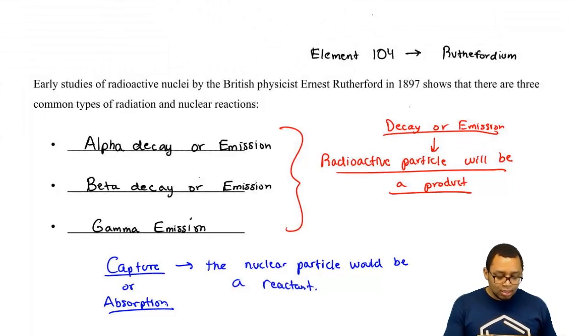So the farther into this chapter we go, we'll learn that beyond these three, we also have positron emissions as well as electron capture. Those will come after we learn these first three major types.